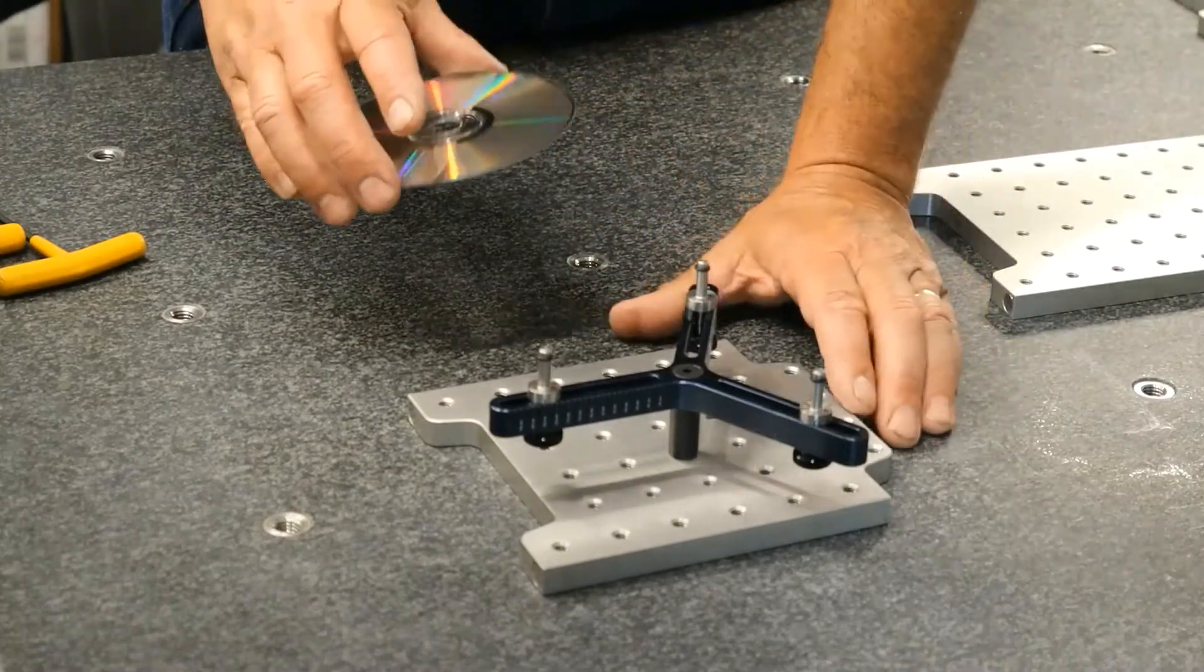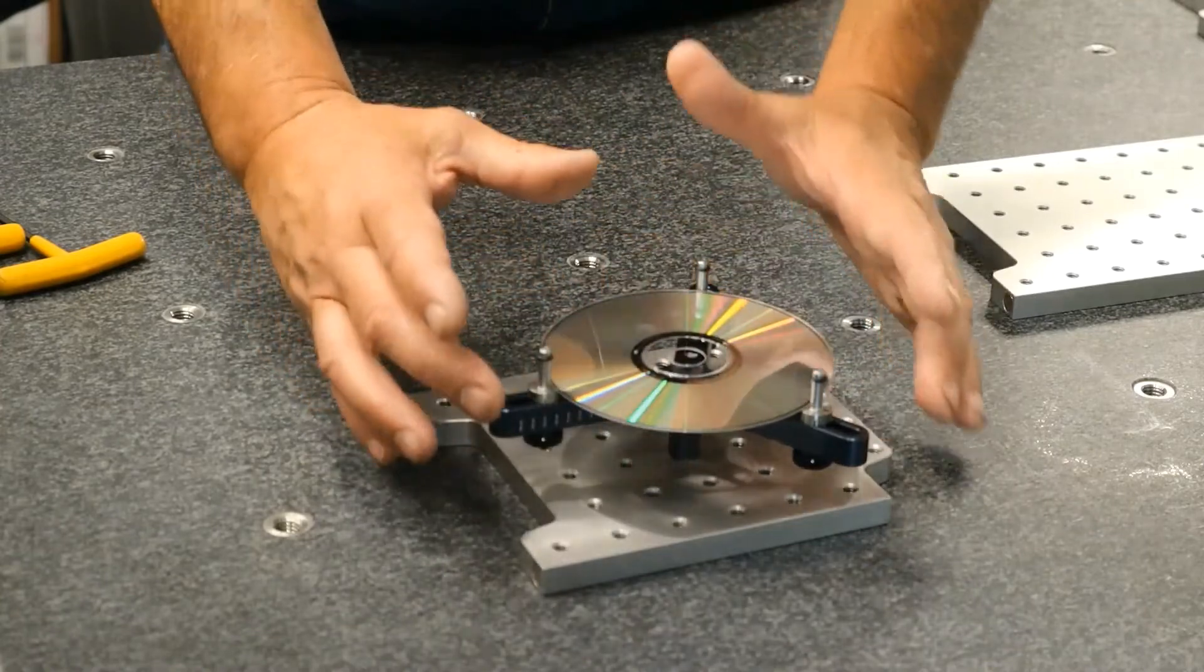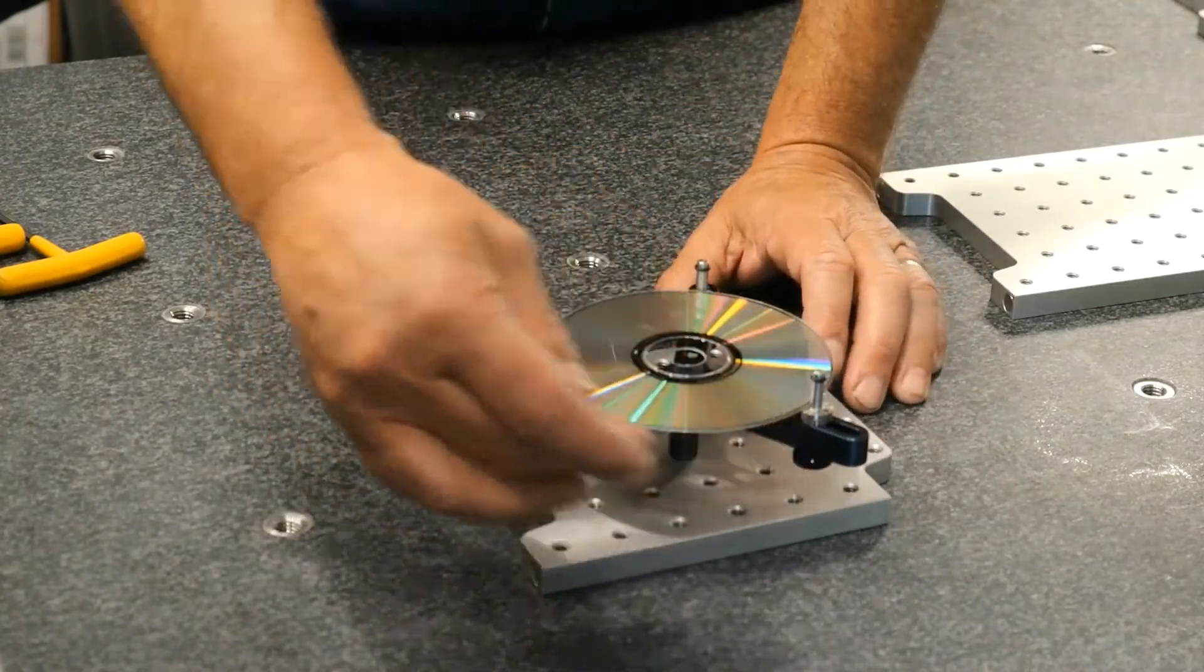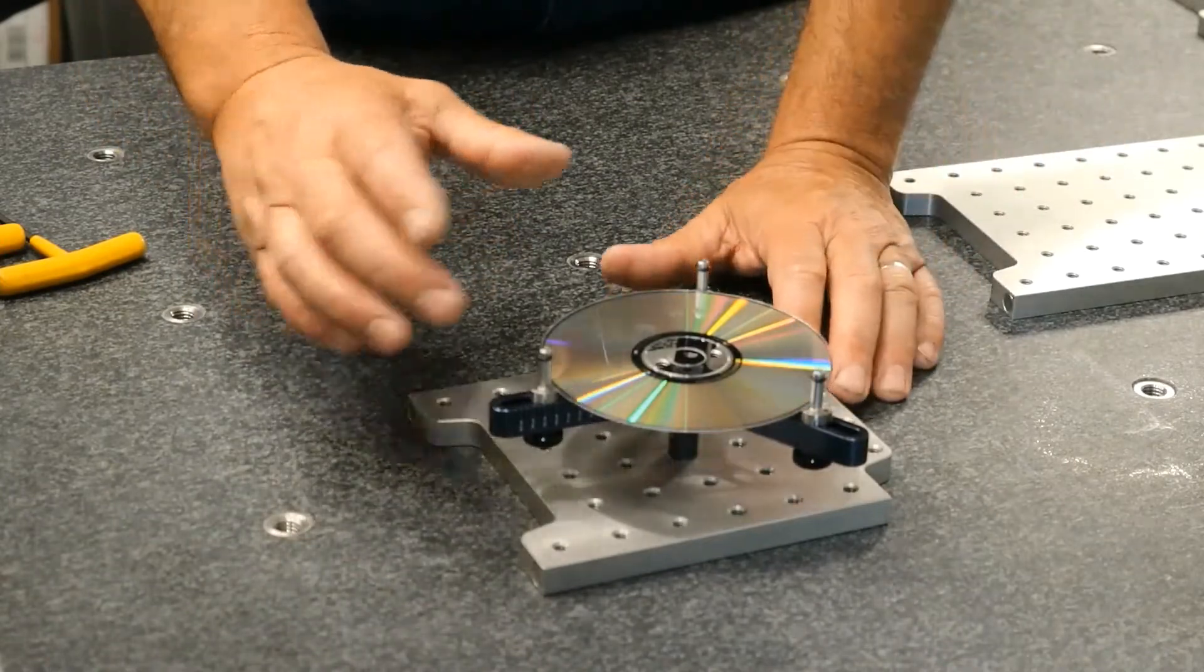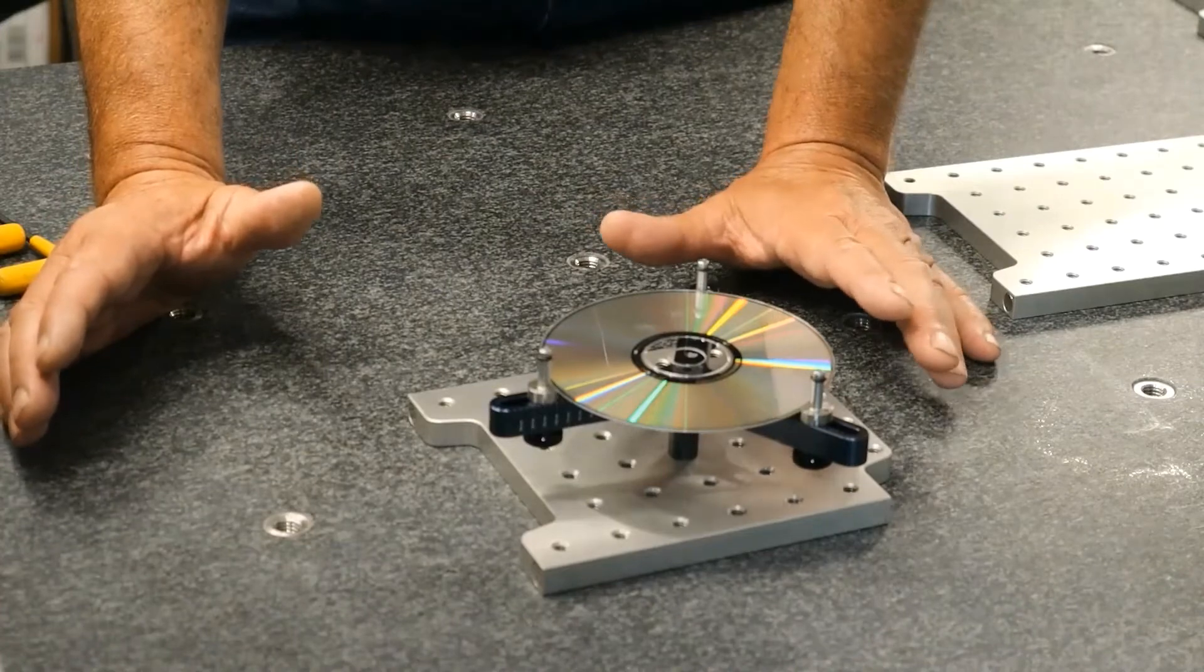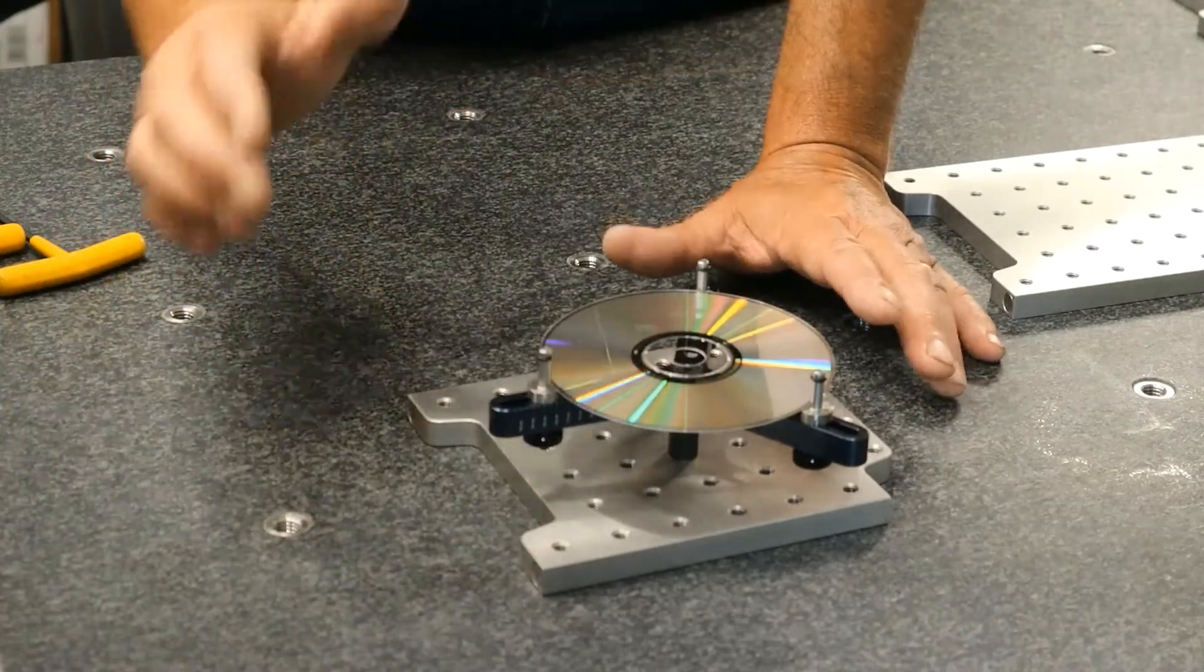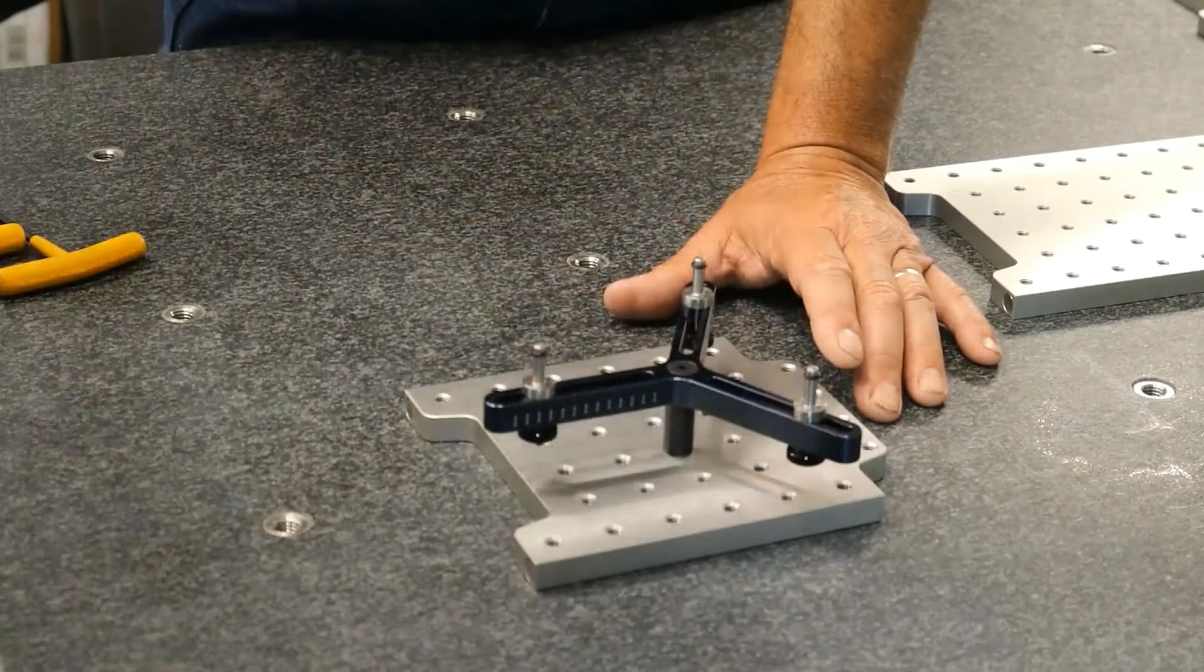So we came up with the spider clamp so that they could put this in here and hold the part in its natural state without any kind of force on it. And that pallet full of parts became good because they were checking it without any undue force on it.